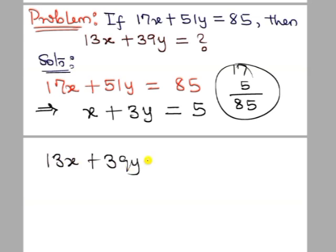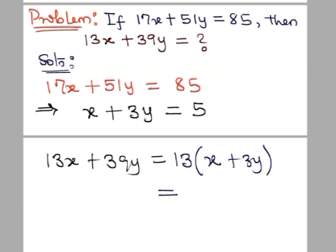13x plus 39y is the same thing as, if I factorize 13 here, I'm going to get 13 times x plus 3y. And that makes my work very easy. So if I had called this equation 1, you would see that from equation 1, x plus 3y is equal to 5.